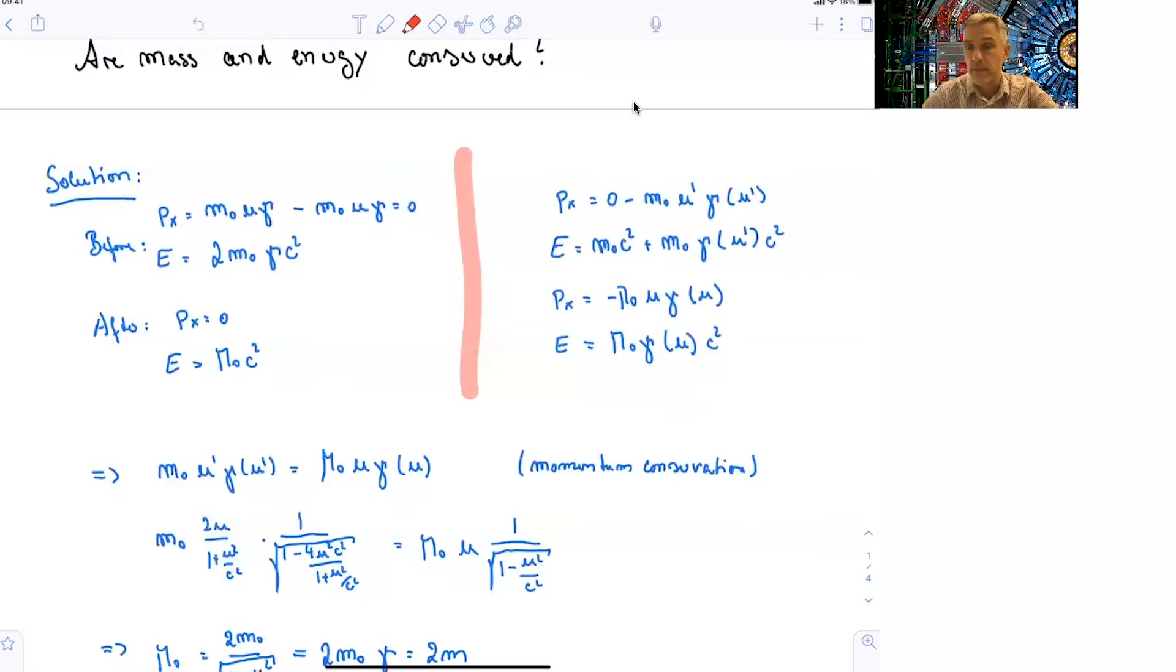The energy before is 2 times the mass times gamma times c square. After the collision, the particle is at rest. It's a new one particle with the rest. It has an energy large M times c square.